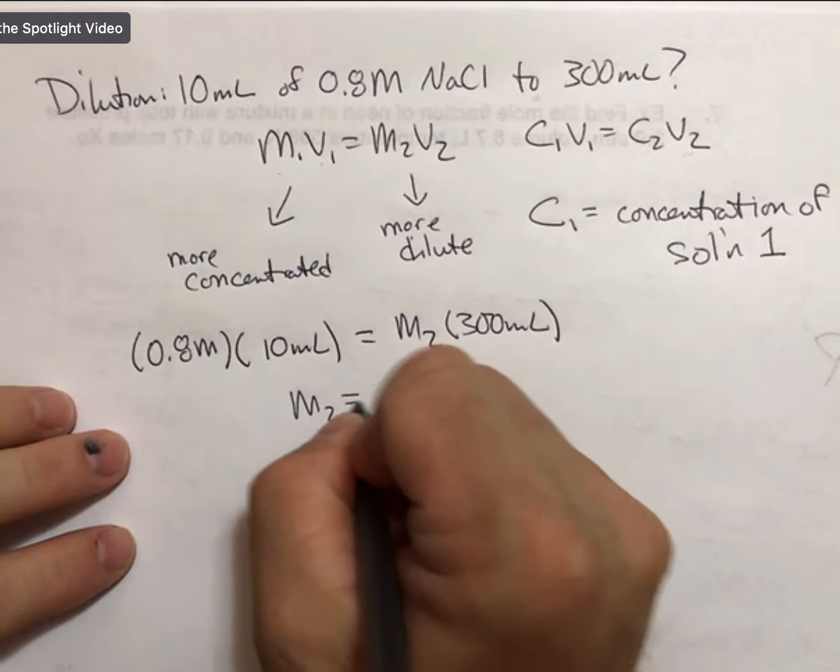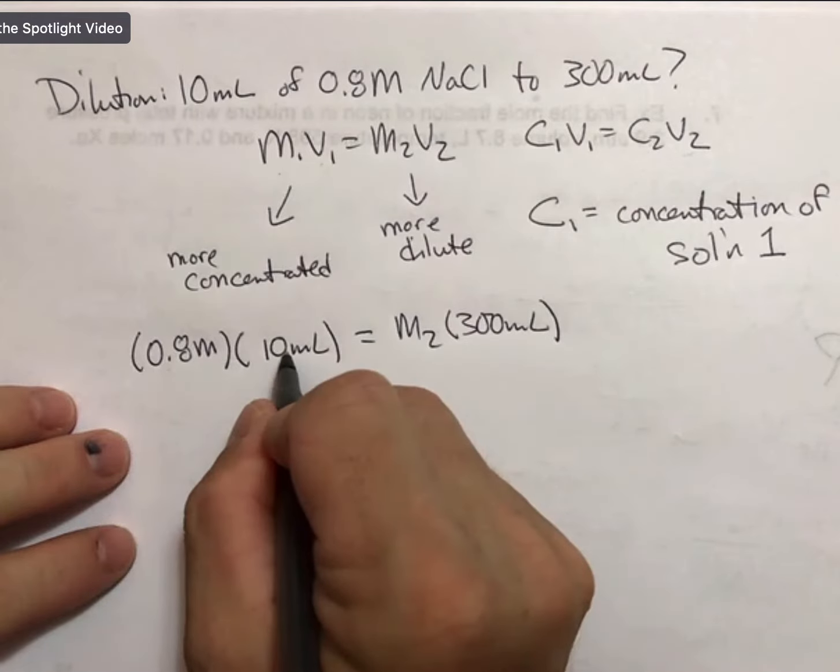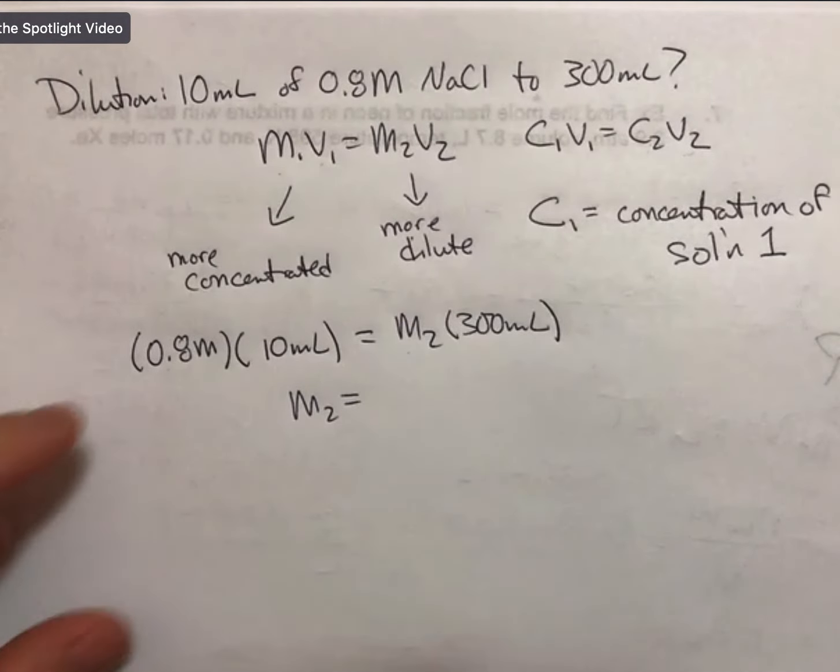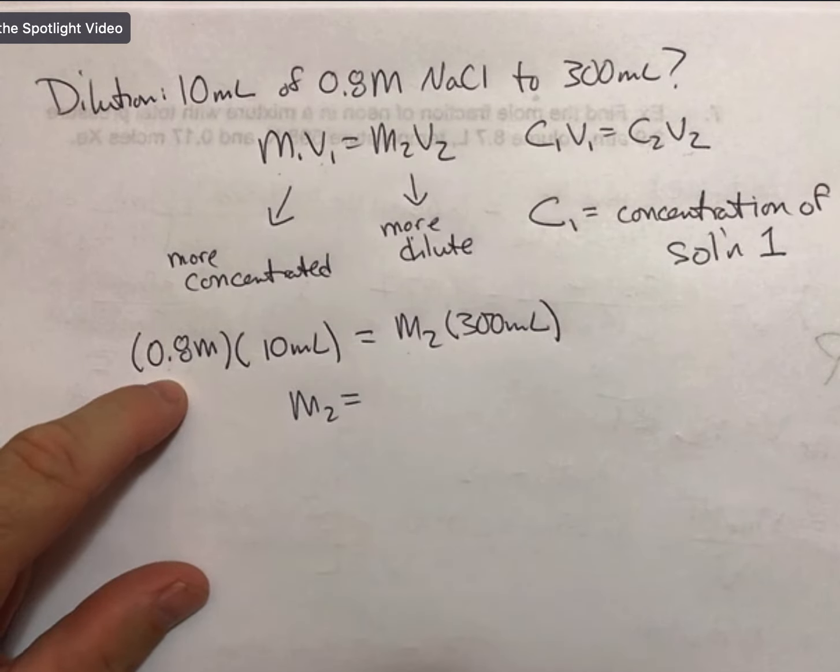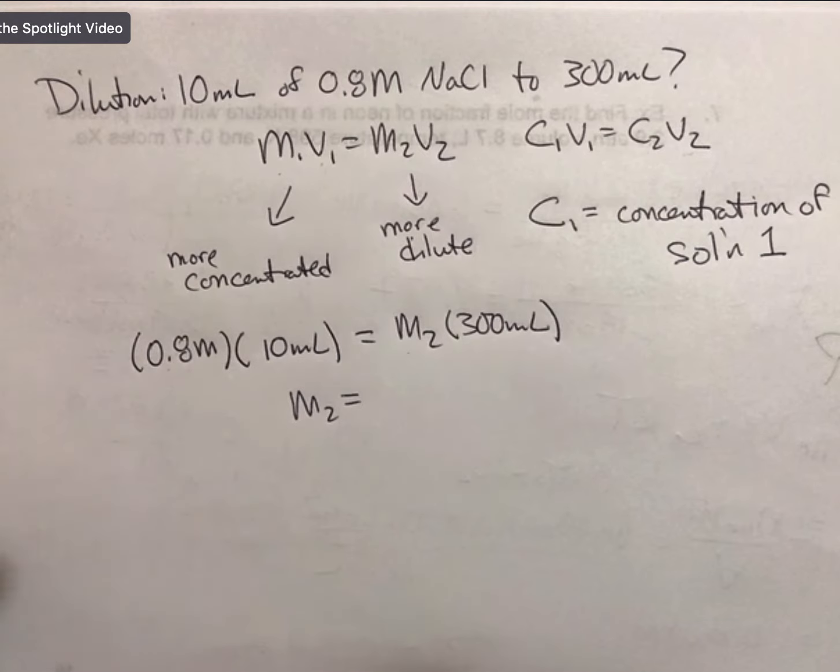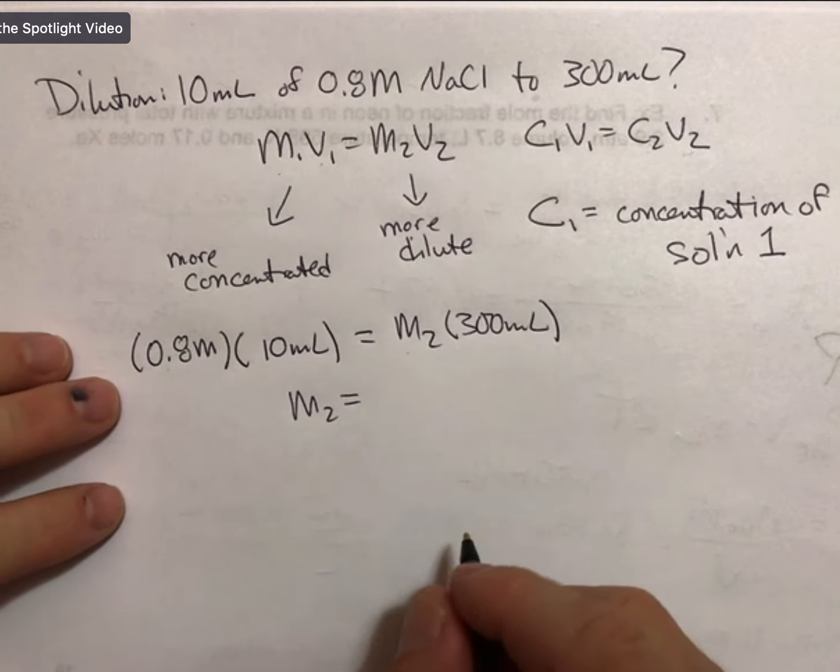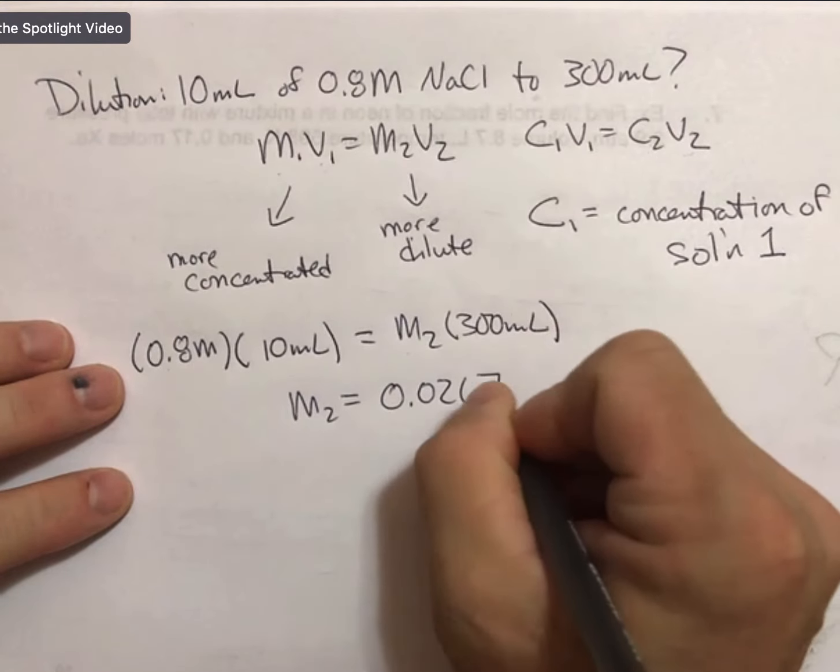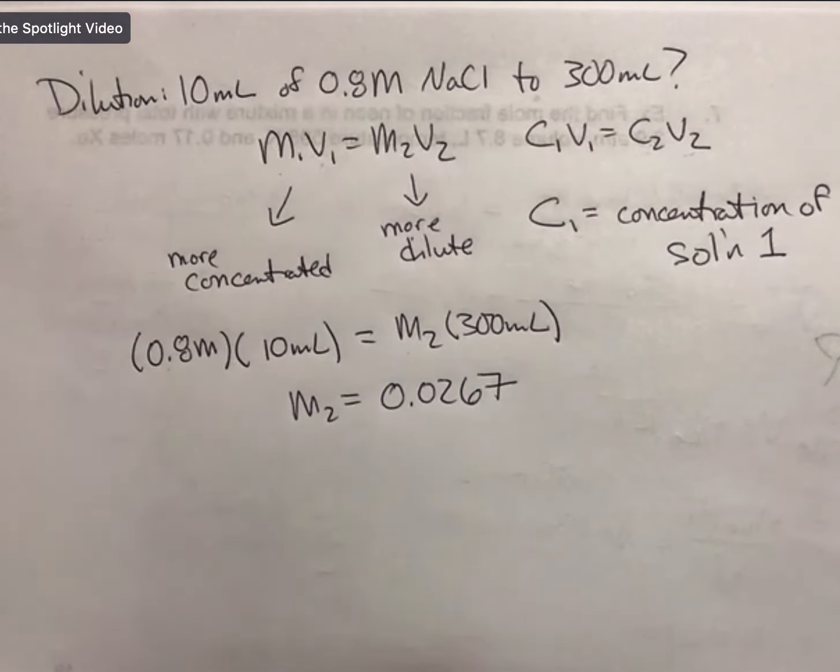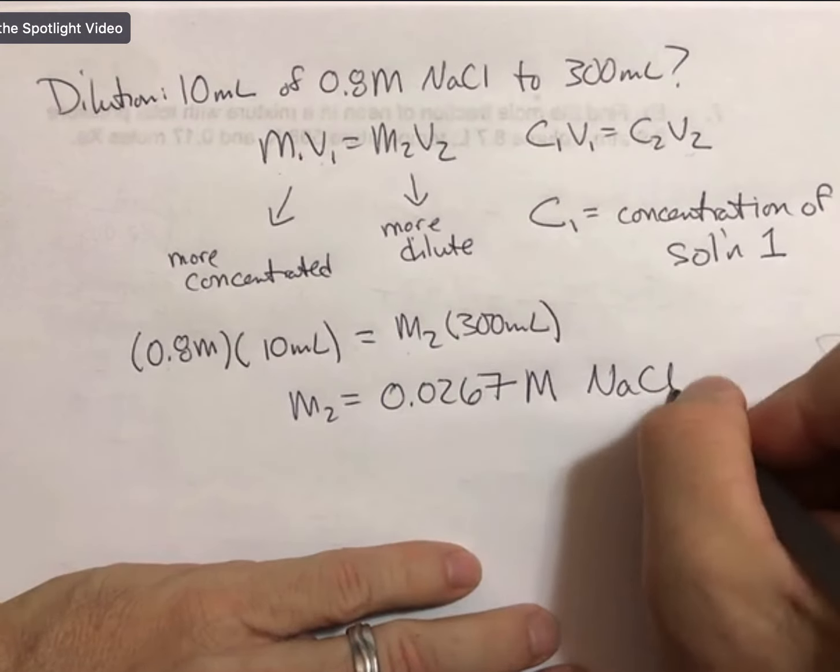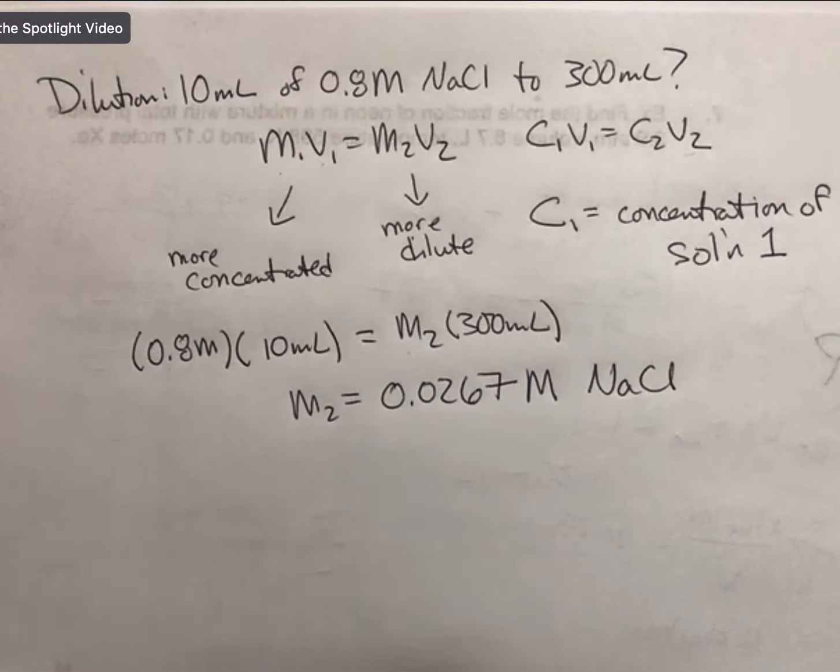Mathematically, I can multiply the left-hand side, divide by the right-hand side to get M2 by itself. I get 0.02666666, 0.026, and I'm just going to round that to 0.0267 molarity sodium chloride solution, to 3 sig figs.